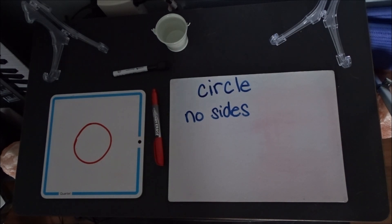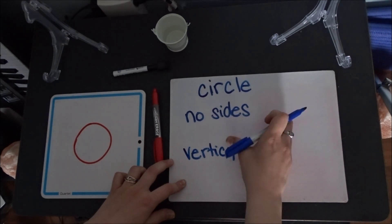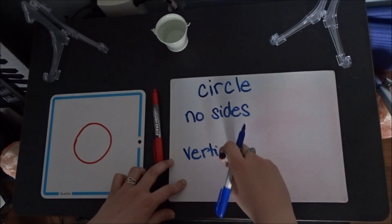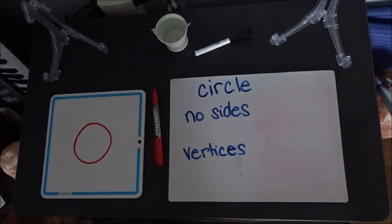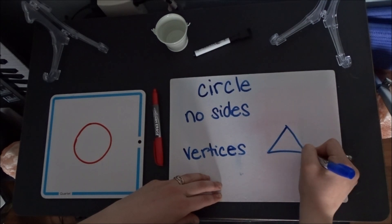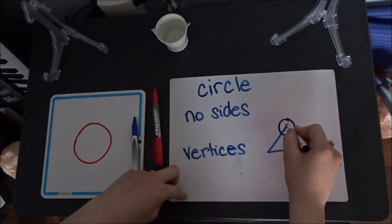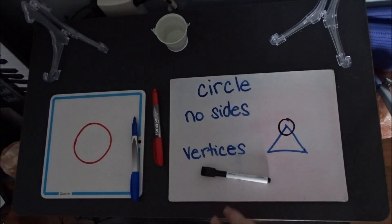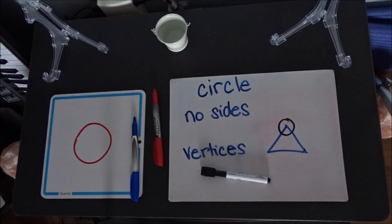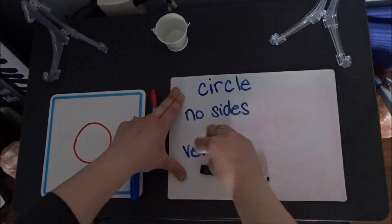Does it have vertices? Now you might be thinking, Mrs. Mount, what is a vertices? When there's more than one of them, it's called vertices. Vertices are points where your sides meet. So on a triangle, the vertex is right where those sides meet. Do we have vertices on our circle? No — our circle has no sides, so there are no vertices.